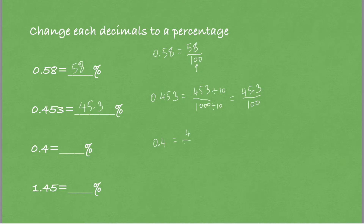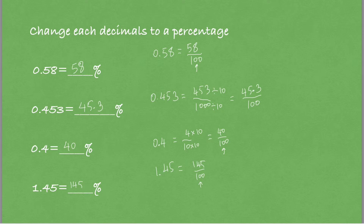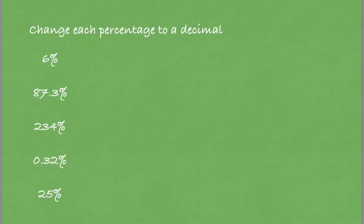The next example is 0.4, which equals 4 out of 10. The denominator is not 100, so to make it 100 I multiply both numerator and denominator by 10, giving 40 out of 100. So 0.4 equals 40 percent. The last example is 1.45, which equals 145 out of 100. The denominator is already 100, so we write 145 percent.